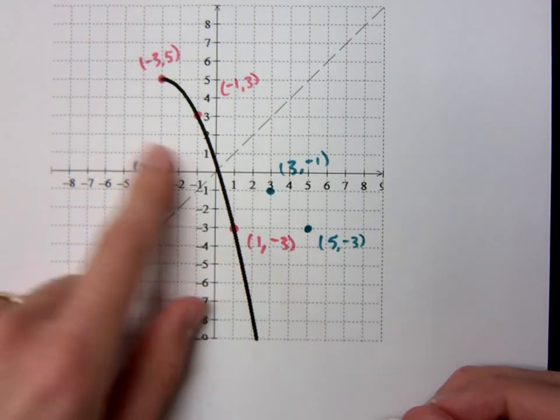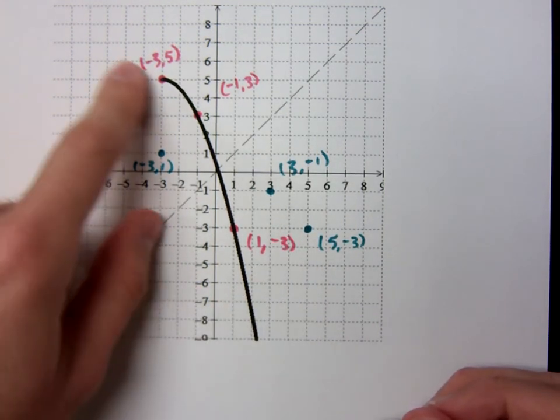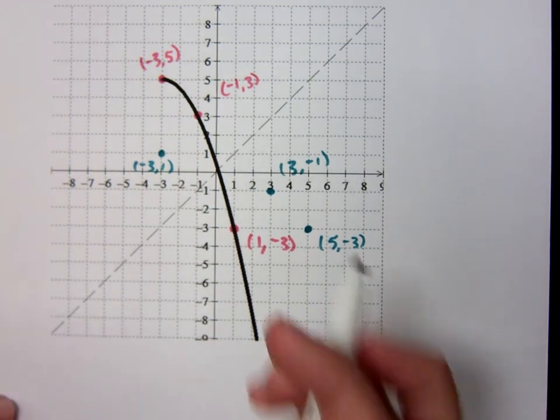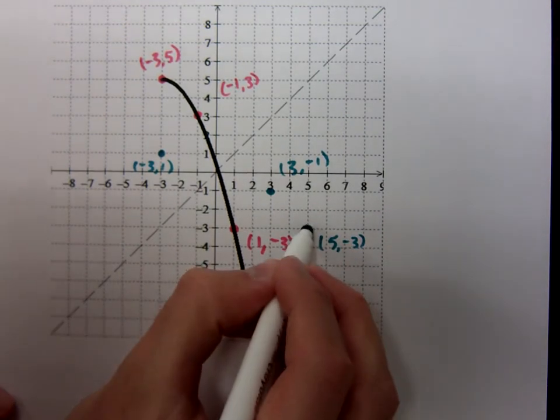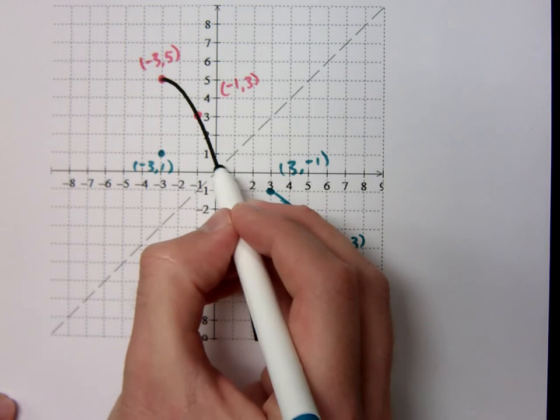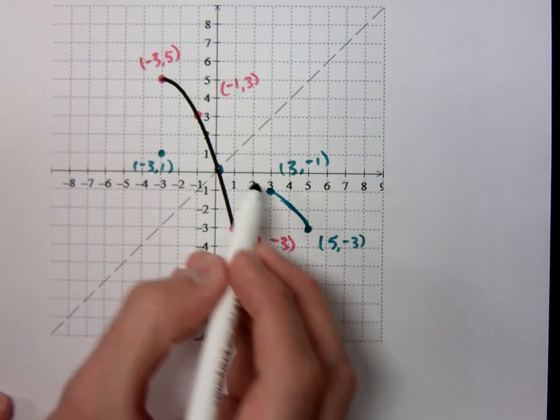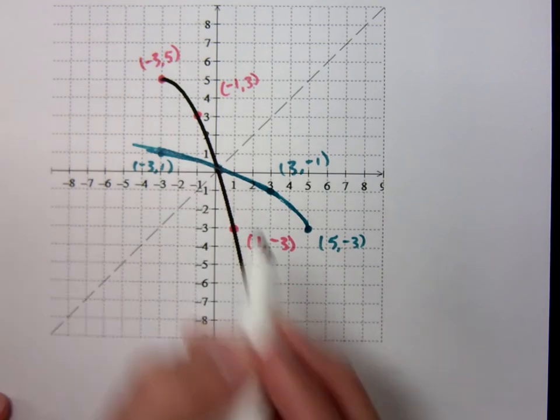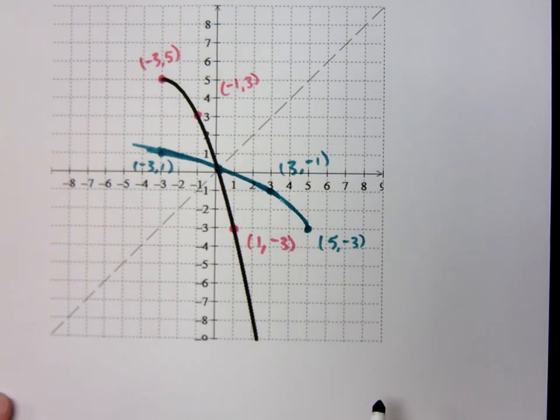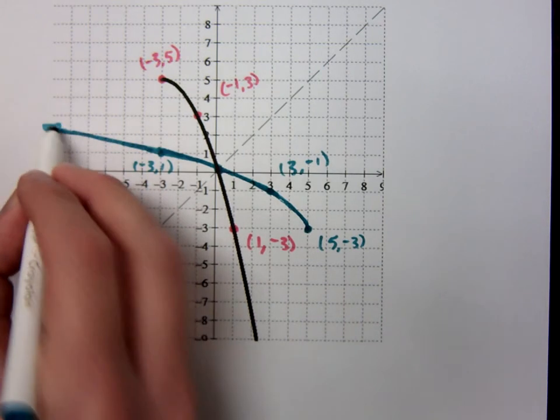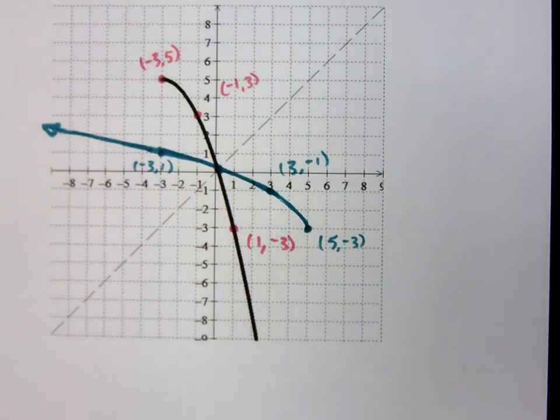I should be able to connect these points and get something very similar to this guy, right? Let's see if I can do that. Now, I do have to cross right here where that guy crossed. So, that kind of helps me out a little bit. All right. It's getting kind of dicey here.